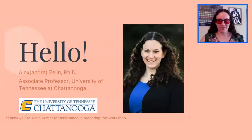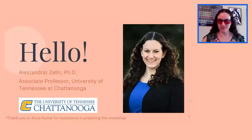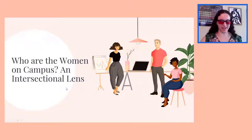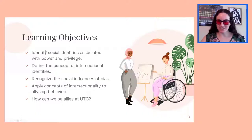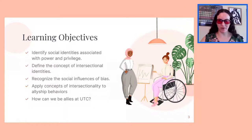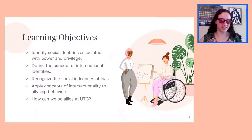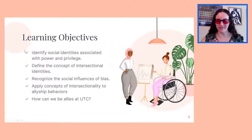Thank you for inviting me. I also want to thank Alicia Kumar for assistance in preparing this workshop — I want to make sure that her voice is also represented here. The learning objectives for today are to identify social identities associated with power and privilege, define the concept of intersectional identities, recognize the social influences of bias, and apply the concepts of intersectionality to allyship behaviors.